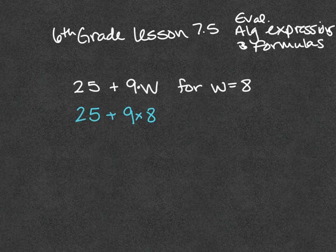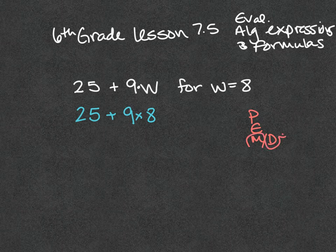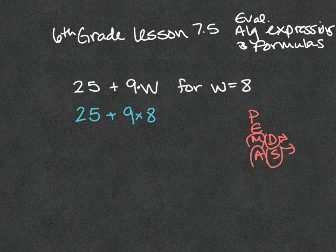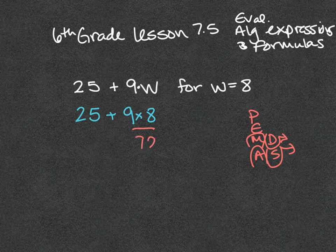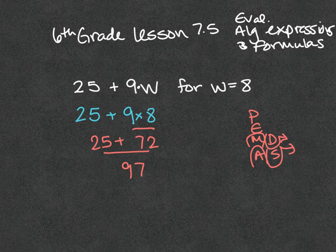Remember, order of operations: parentheses, exponents, then multiplication or division whichever comes first going left to right, and then add or subtract whichever comes first going left to right. So I see multiplication here. That has to go first. 9 times 8 is 72. Bring down the 25. Then I do the addition of 25 plus 72, which is 97. And that's it.